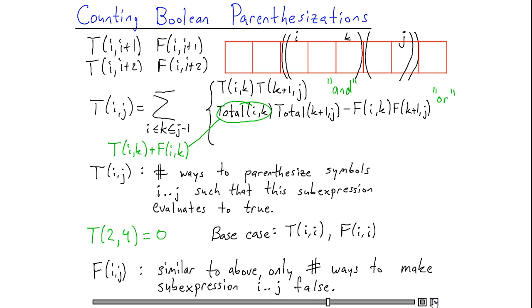And I'm subtracting from that the number of ways I can parenthesize splitting at point k such that the expression has false on both sides. Remember that the only way to make an or expression false is to make both of its operands false. And so the number of ways I can parenthesize an or expression such that it evaluates to false is going to be the total number of possible ways I can parenthesize minus those in which both operands are false.